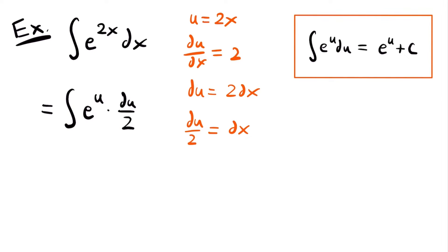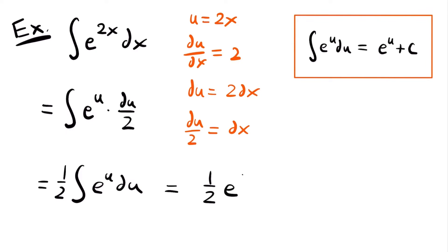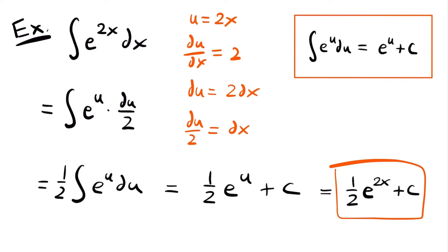Now we're ready to solve. Pull the one-half to the front: one-half times the integral of e to the power of u du. Using our rule, the integral of e to the power of u du equals e to the power of u plus c, so this equals one-half times e to the power of u plus c. We're not done — replace u with 2x, giving our final answer: one-half times e to the power of 2x plus c. This is the antiderivative of our function.